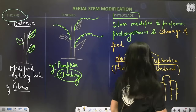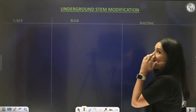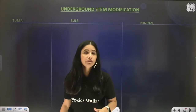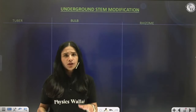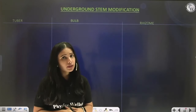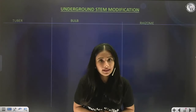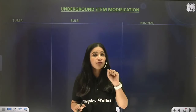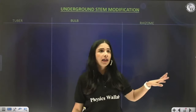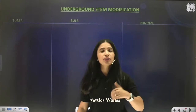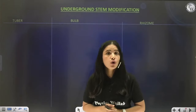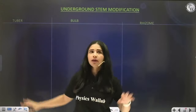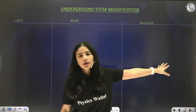Moving ahead towards underground stem modification — also very important, with questions frequently asked from this section. There are four categories: tuber, bulb, rhizome, and corm. We will cover the first three: tuber, bulb, and rhizome.